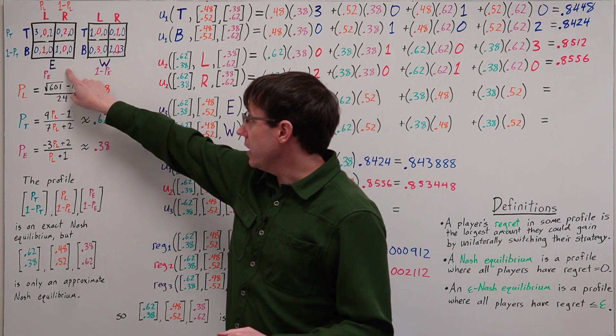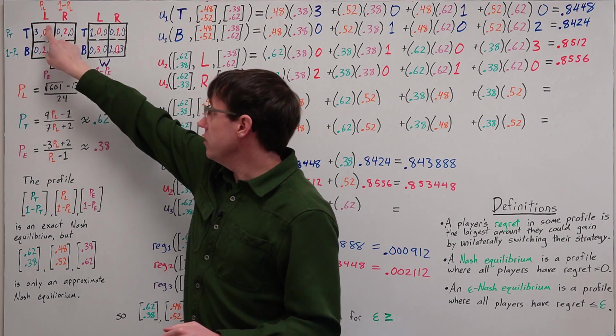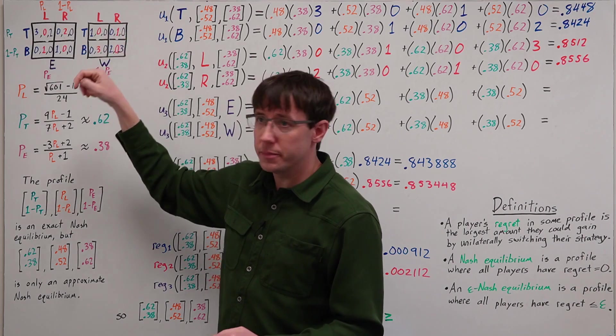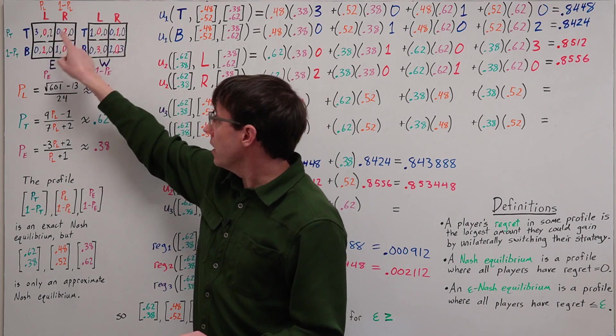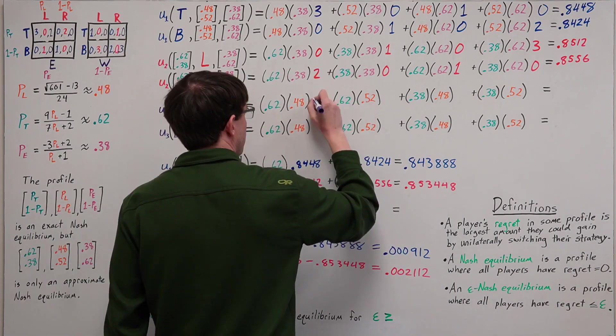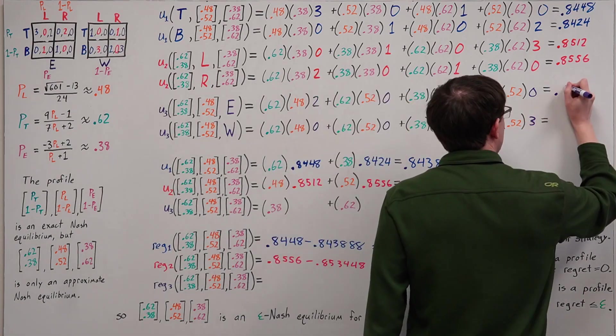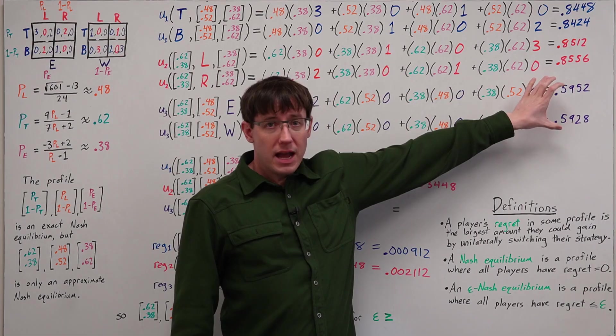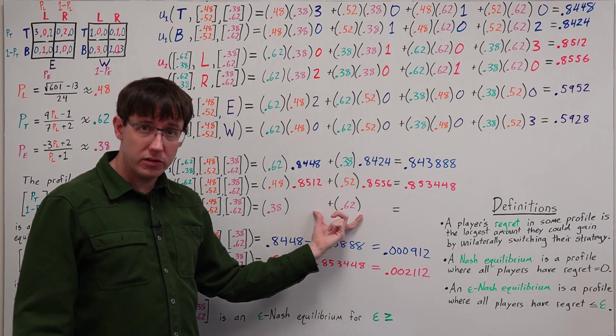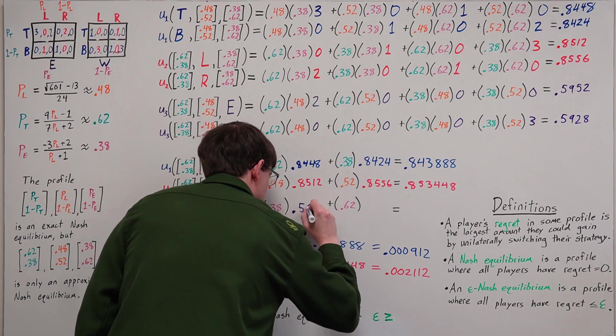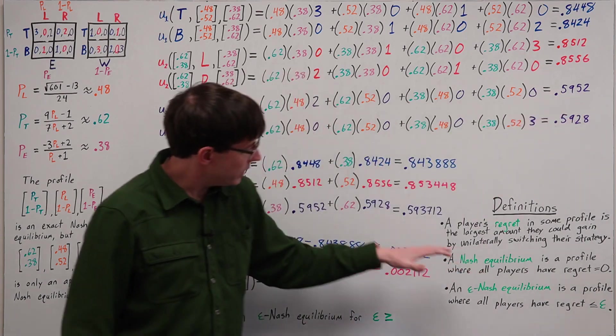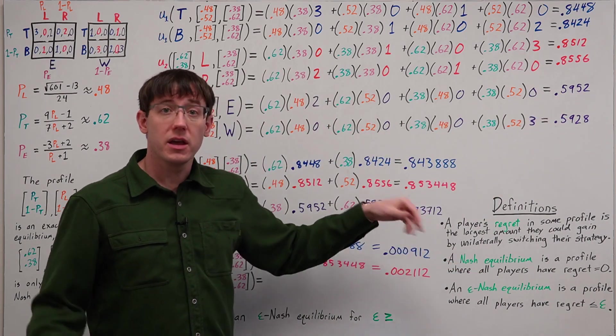For player three, when they play E, we get a distribution over these four profiles. And when they play W, we get a distribution over these four. And so we can fill in their payoffs to our expected utility calculations. And then the expected utilities for each action can go into our expected utility calculation for the mixed strategy. And then a difference between the better action and the mixture expectation gives us the regret.